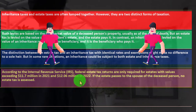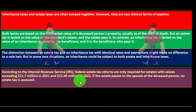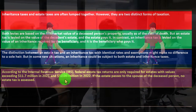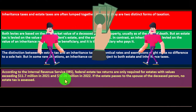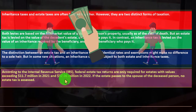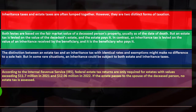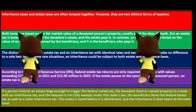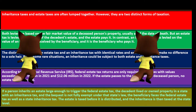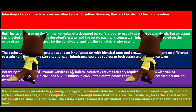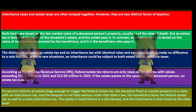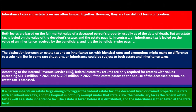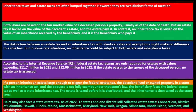The federal estate tax was originally designed to only tax really wealthy people — not to creep down to the middle class. If the estate passes to the spouse of the deceased, no estate tax is assessed. If a person inherits an estate large enough to trigger the federal estate tax, and the decedent lived in a state with an inheritance tax, and the bequest is not fully exempt under state law, the beneficiary faces both the federal estate tax and a state inheritance tax.